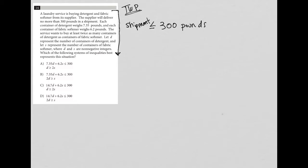Each container of detergent weighs 7.35 pounds, so detergent equals 7.35 pounds per container. And each container of fabric softener weighs 6.2 pounds per container. And this is the softener.